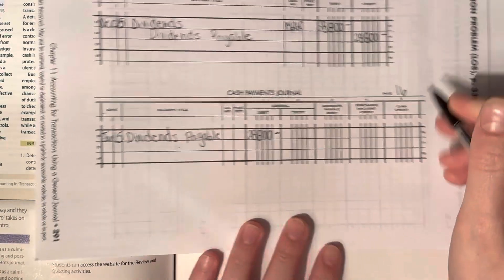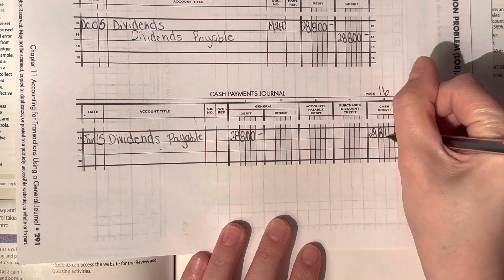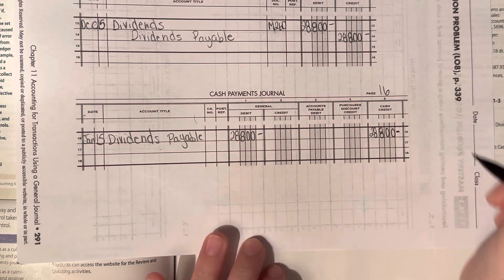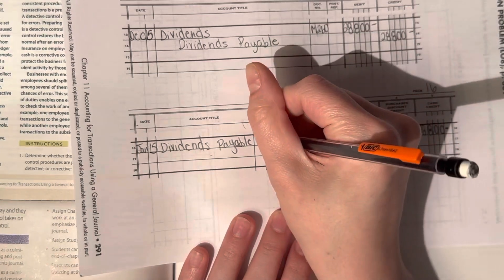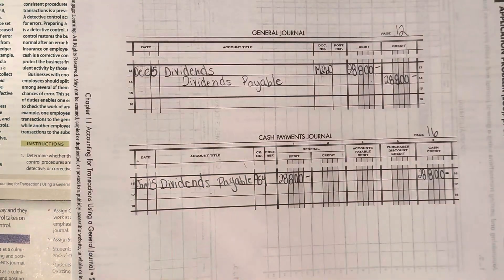And then we have cash credited because we've actually paid cash. The document number was check number 954. So there you have it. Application 11.3.